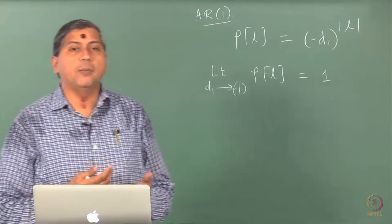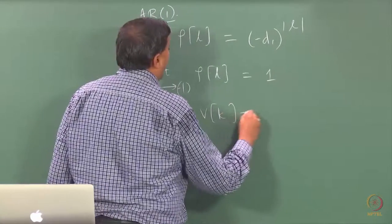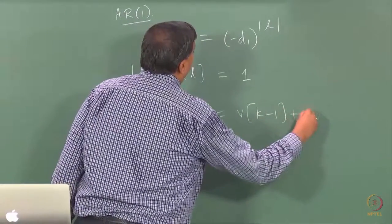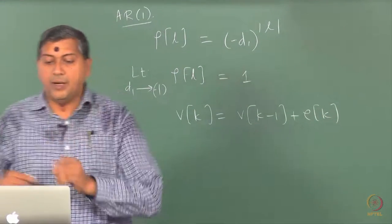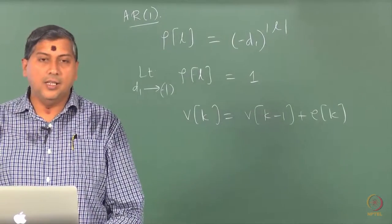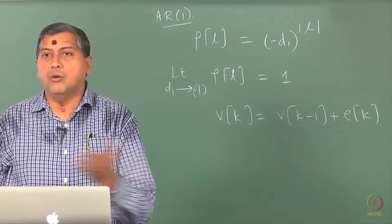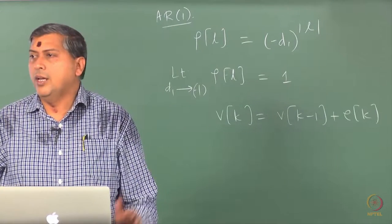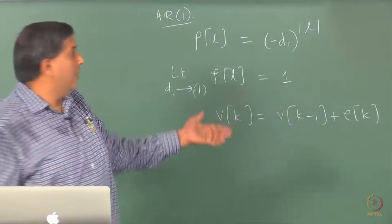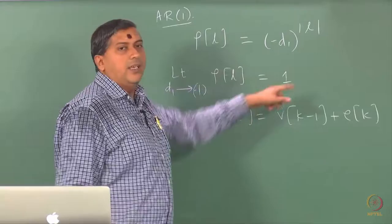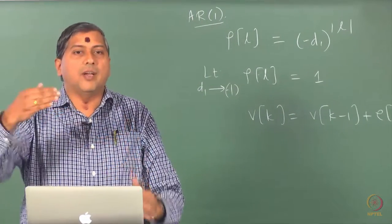The ACF actually goes to 1, which is not to be taken very rigorously, but qualitatively we know that if we have an integrating process, then the observations are highly correlated. The best prediction of this observation is the previous one. If you take an integrating process and look at its ACF, it should have ideally no decay. But this is not really the ACF for the integrating process — we are just saying this in the limit as d1 approaches 1.